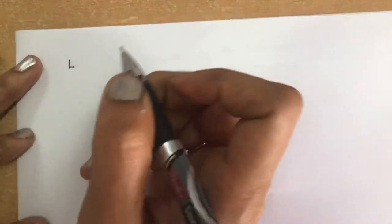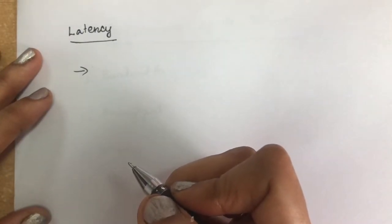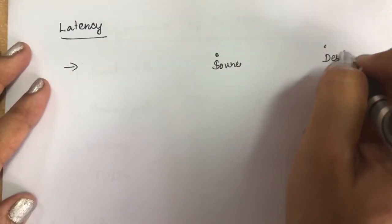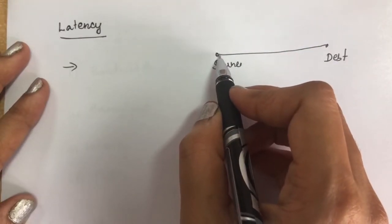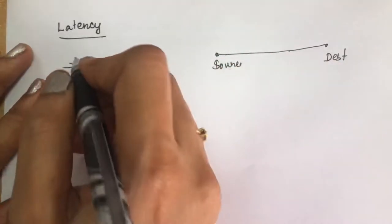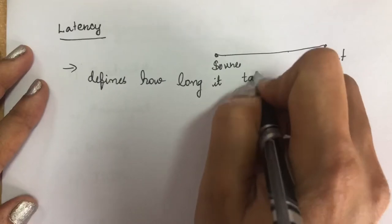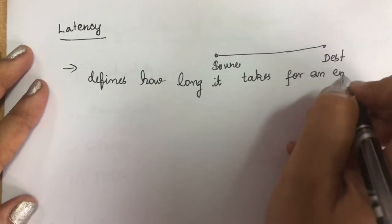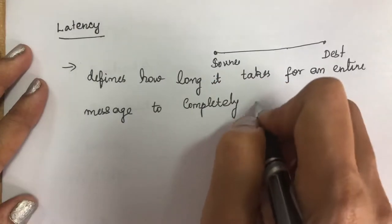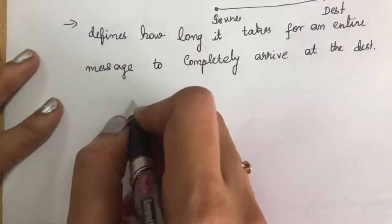Next we will see latency, the third performance characteristic. Latency defines how long it takes for an entire message to completely arrive at the destination — from the first bit sent out of the source to the last bit received at the destination.